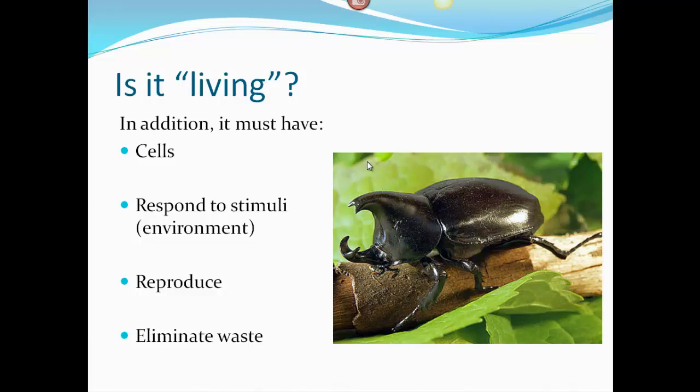Another characteristic is responding to the environment or responding to stimuli. If you turn on a light, you'll notice bugs scatter away — that's responding to stimuli. So all living things respond to some kind of stimuli or something in the environment. They also have to be able to reproduce and eliminate waste. Those are the characteristics of life — there are eight of them.